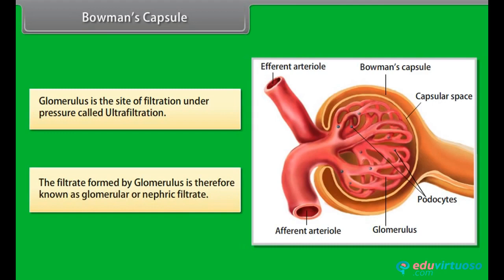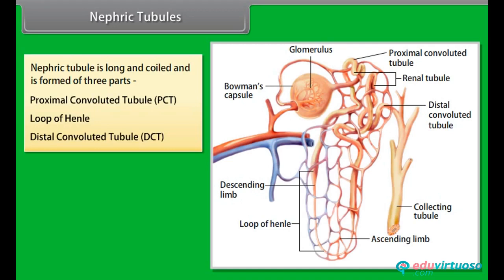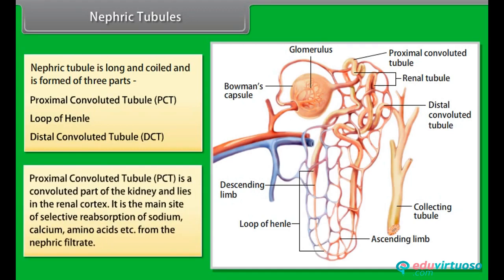The filtrate formed by the glomerulus is known as the glomerular or nephric filtrate. The nephric tubule is long and coiled and is formed of three parts: the proximal convoluted tubule (PCT), the loop of Henle, and the distal convoluted tubule (DCT). The PCT is a convoluted part of the kidney lying in the renal cortex, and it is the main site of selective reabsorption of sodium, calcium, amino acids, etc. from the nephric filtrate.